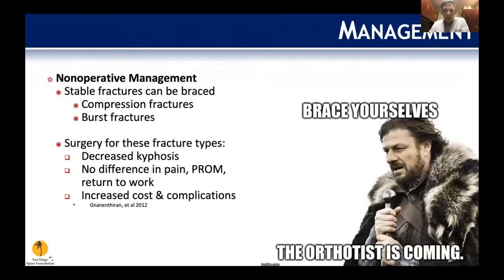How do we treat these injuries? The main goal of surgery is to stabilize the spine, prevent deteriorating neurologic function, and prevent deformity such as increased kyphosis. Stable fractures — compression fractures and stable burst fractures — can be treated non-operatively, with discussion about bracing versus no bracing. For operative cases, the goals are to decrease kyphosis, decrease pain, and get patients out of the hospital faster.